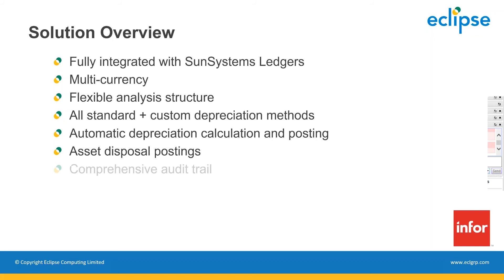Additionally, like everything within Sun Systems, we have the ability to run detailed audit trail reports on anything set up within the static data — any asset records, any changes to asset records. Anything within the standard Sun Systems setup is automatically available for reporting through tools such as Q&A Vision, Q&A Excel, or Executive Viewer — whatever is being used for reporting.